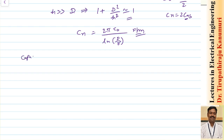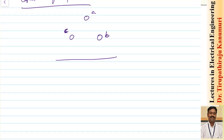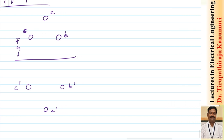Now let us take the capacitance of a three phase line, using the GMR and GMD concept. Let us assume that the conductors are equally spaced: A, B, and C. Let us assume the earth is here. Image conductors I have to assume below, so I am taking the image conductors: image conductor will be C dash, B dash, and A dash. Let us assume this height is equal to h. Now, how to calculate this?